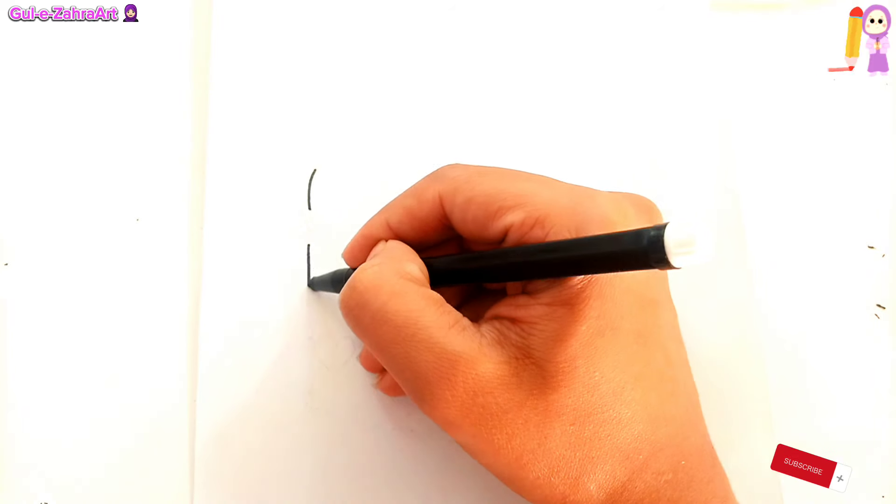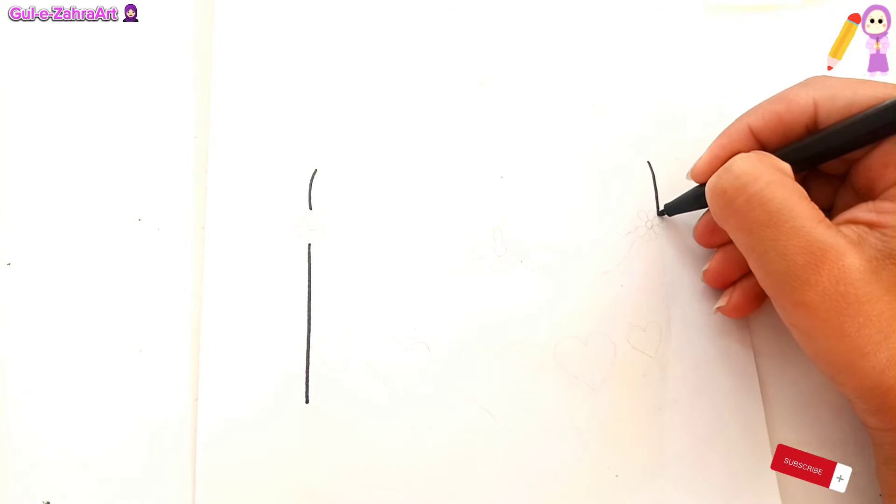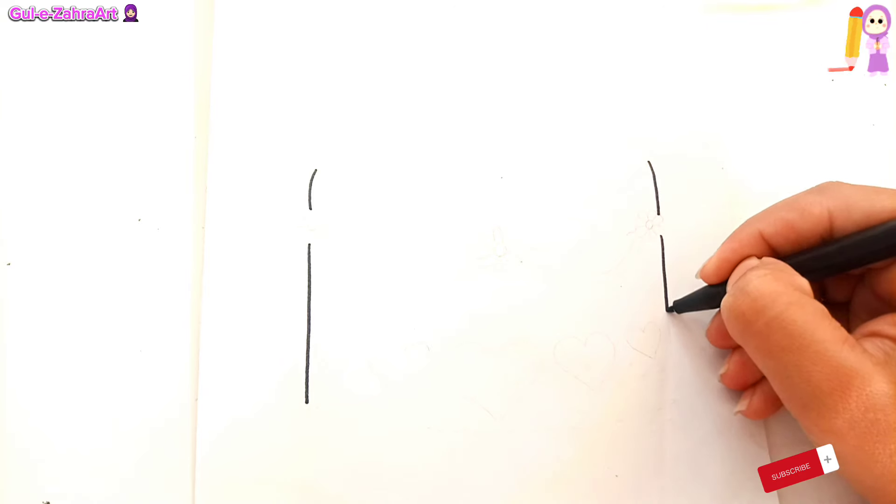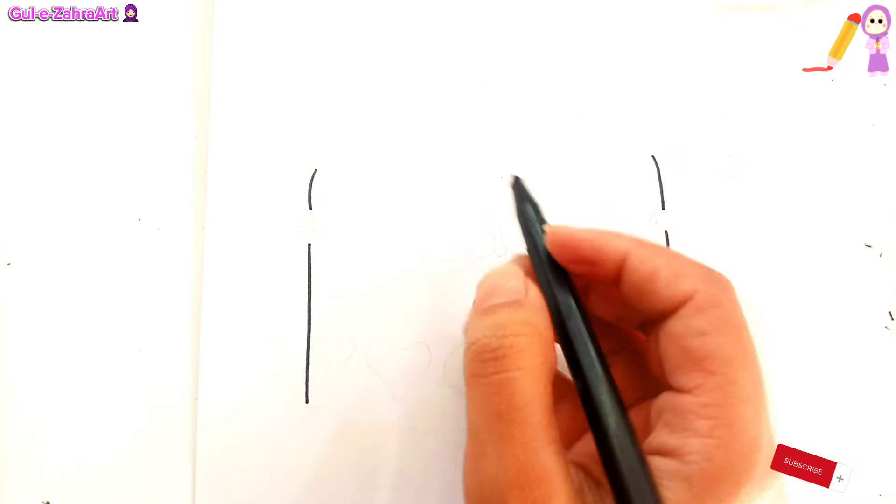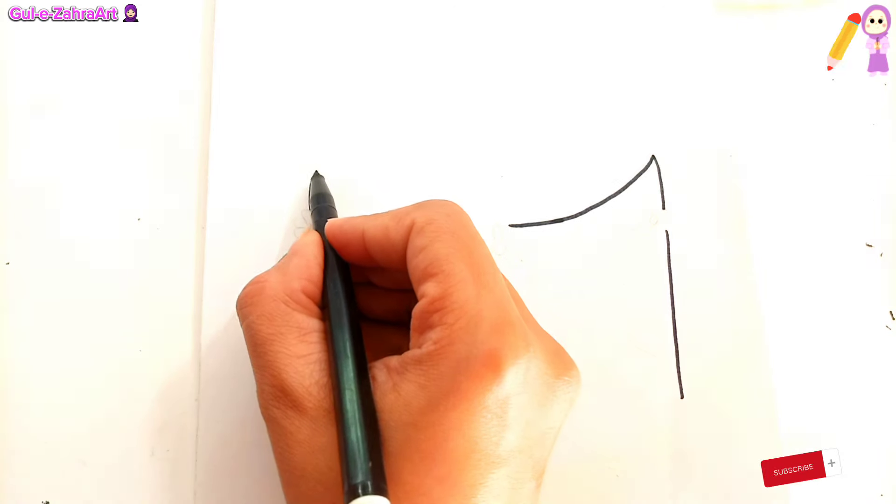First, draw the sides of cake. Draw a small curve and a straight line from some distance. This distance is for flour. Same on other side. Draw the inner curve line of cake. Complete the shape in this way.